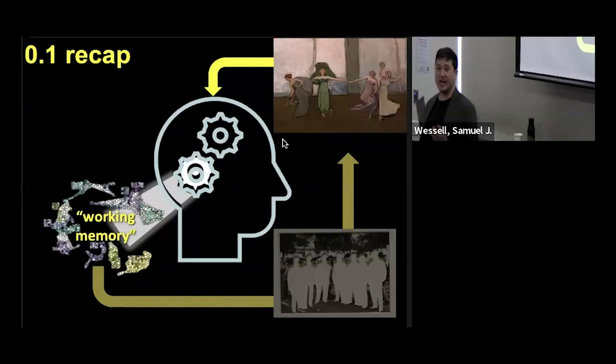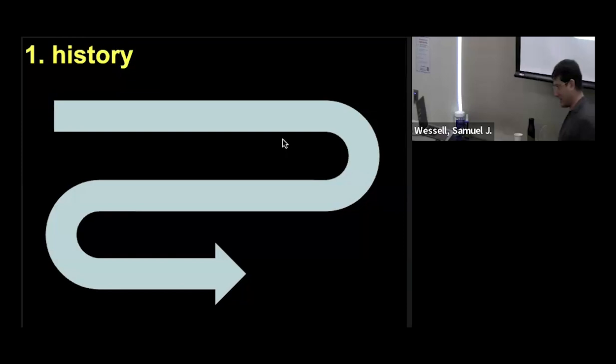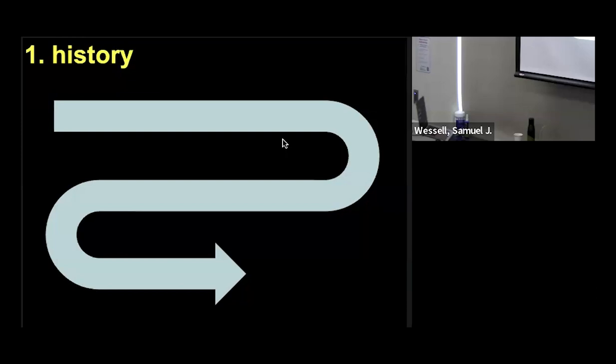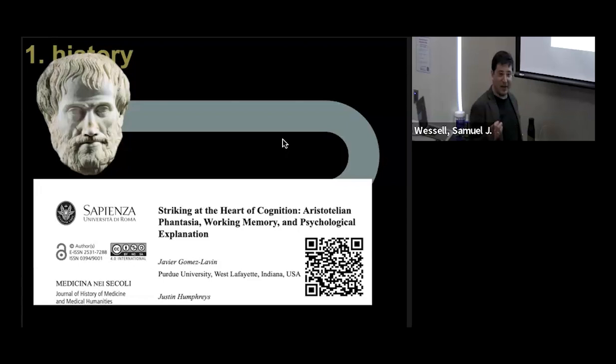Aristotle's view of mentation, specifically his view of fantasia, is kind of the predecessor of working memory. In Aristotle, you have the different senses that receive impressions from the world. Then you have thought. One special component in Aristotle's view of thought is called fantasia, the faculty of imagination.